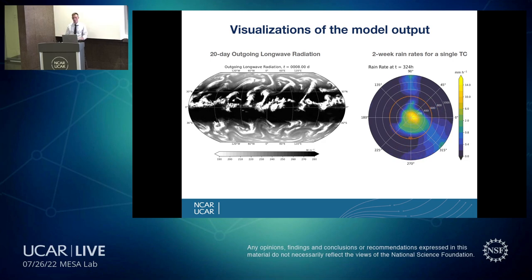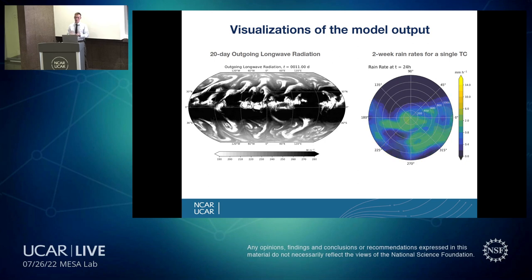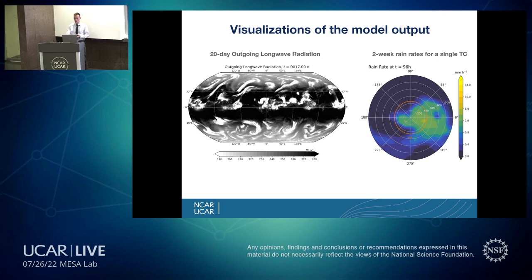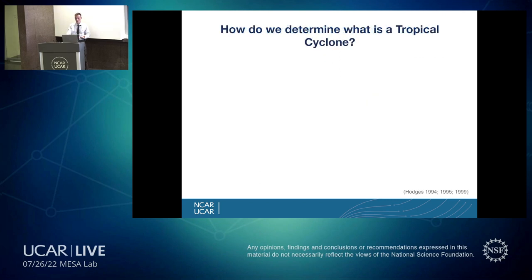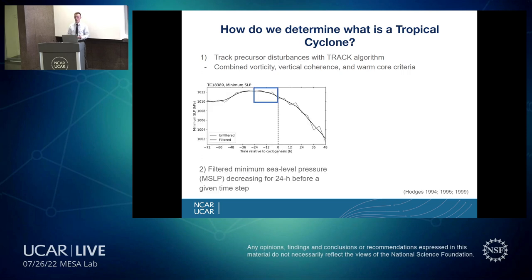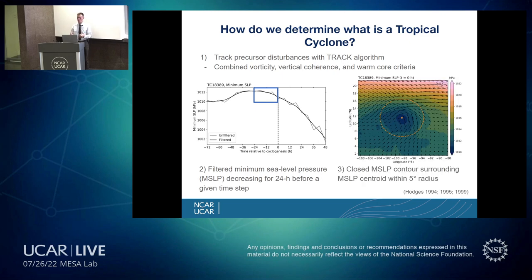Looking at that visualization, you can see that more than just tropical cyclones are being created. So, how do we determine what is a tropical cyclone? We use the TRAC algorithm, which looks for vorticity at the surface, vertical coherence, and a warm core criteria — meaning the vorticity weakens as it goes aloft. We also look for a dropping minimum sea level pressure for 24 hours prior to cyclogenesis, and a closed isobar of minimum sea level pressure surrounding the tropical cyclone center within a five-degree radius.